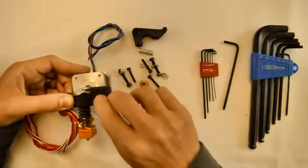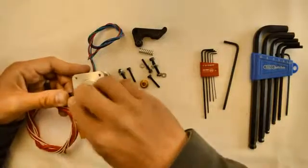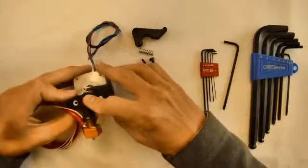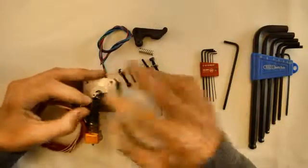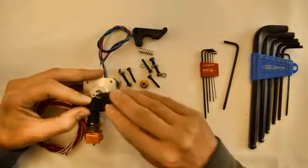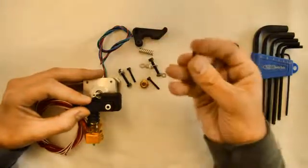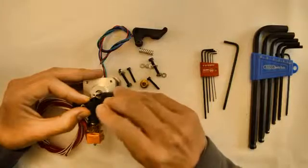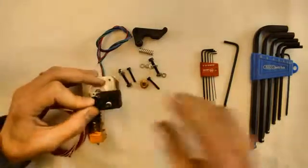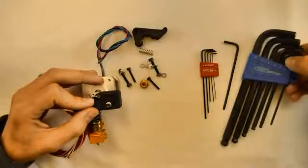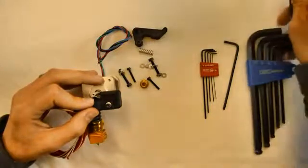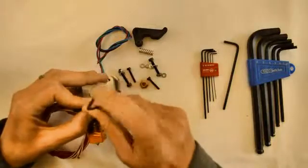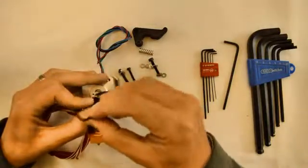So we will use 2 M3 washers for the screws. And then the M3 screws go right through to the bottom. And we will use the 2.5 size Allen key to tighten these down.